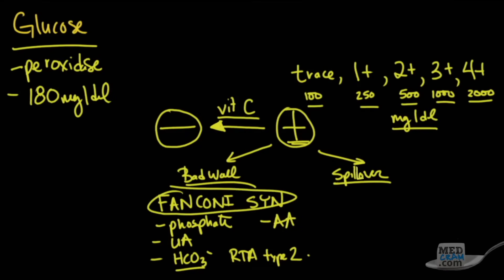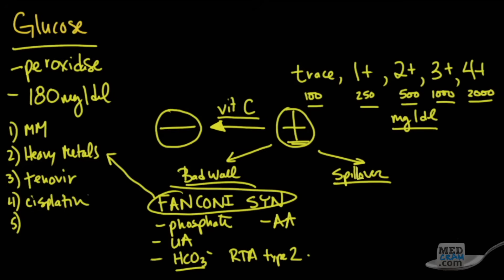Now, what are things that can cause this Fanconi's syndrome? Well, you could have something called multiple myeloma. That is a cancerous disease where you have plasma cells that overpopulate. Other things that could do this would be heavy metals, medications - for instance, tenofovir, which is an HIV medication, chemotherapeutic agents like cisplatin, valproic acid used in mood disturbances, and an antibiotic which is used commonly is aminoglycosides, like gentamicin, tobramycin, amikacin. So all of these causes can cause the Fanconi's syndrome where you have a bad wall.